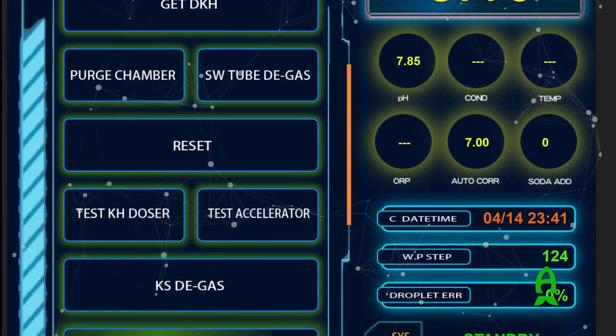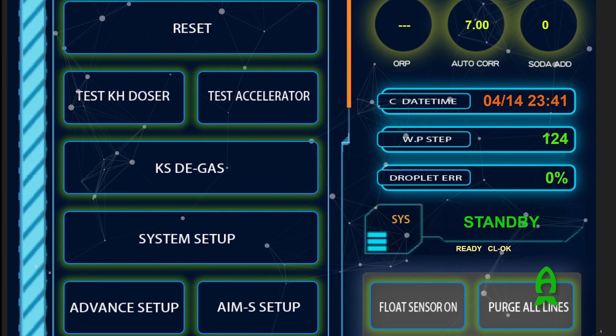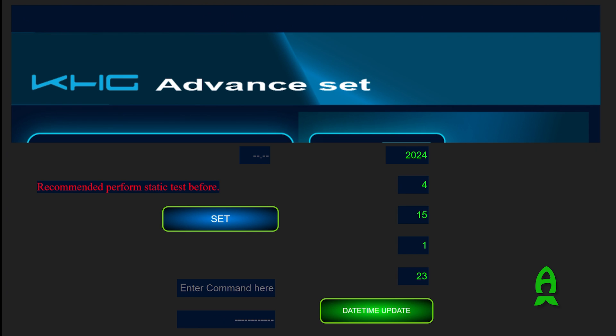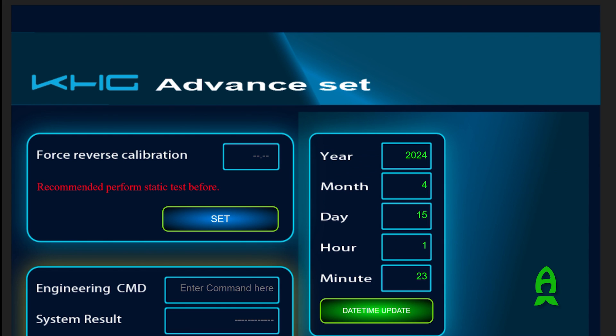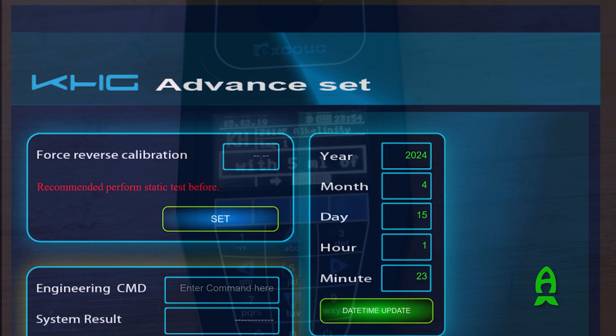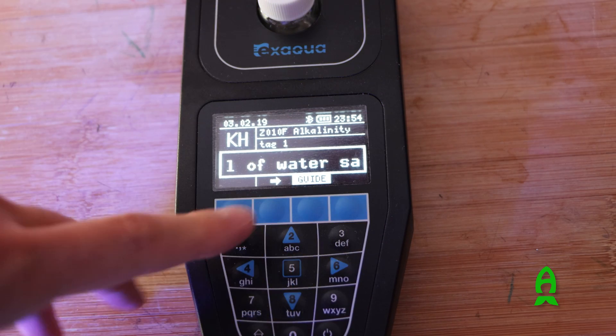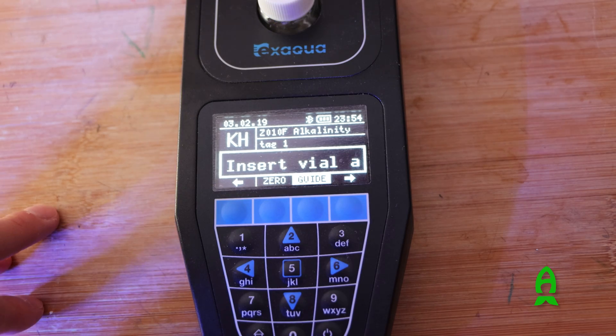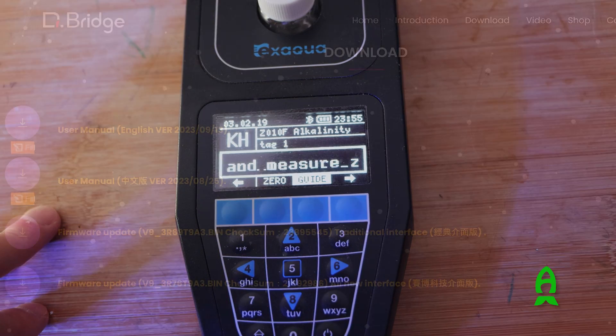You also have an option to calibrate the unit itself by adjusting viewpoints plus and minus to match your manual test results. But I didn't need to calibrate my unit as my results from multiple different test kits mirrored the results that I was getting from the unit itself. We're off to a good start.